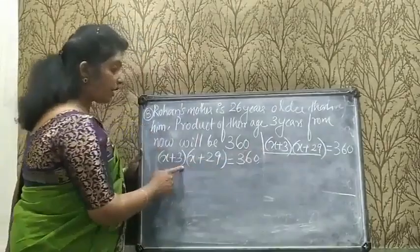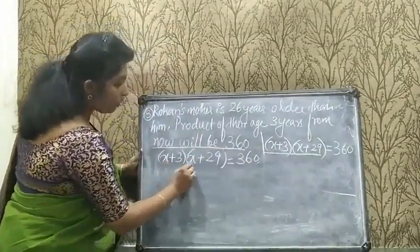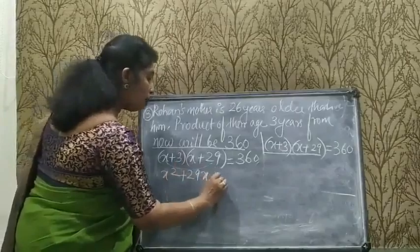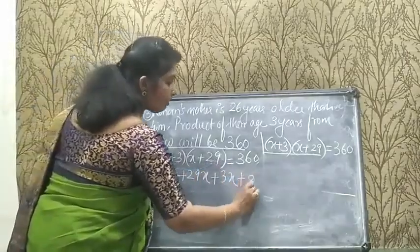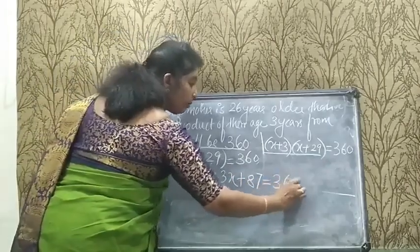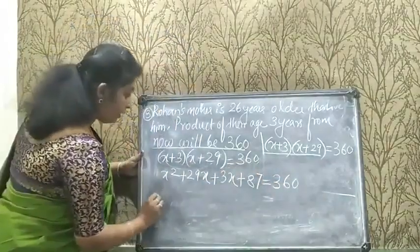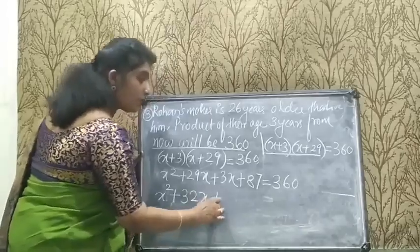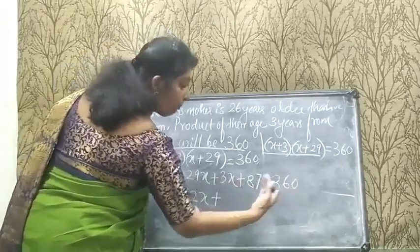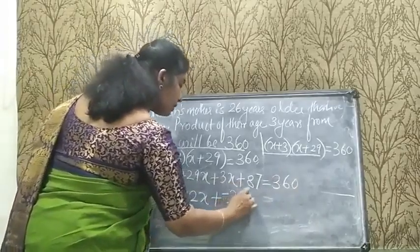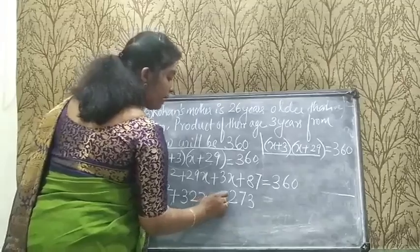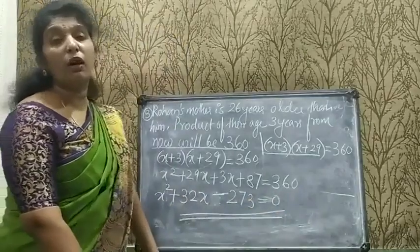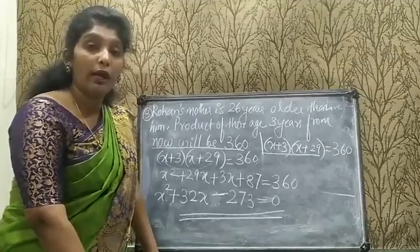So the equation becomes x² + 32x − 273 = 0. This is the given situation expressed in the general form of a quadratic equation.